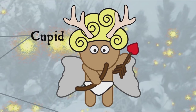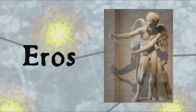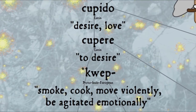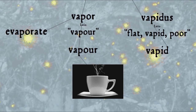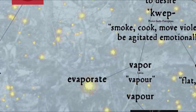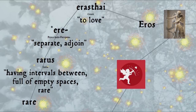Next up is the reindeer Cupid. Cupid is of course the Roman god of desire and erotic love, which the Romans associated with the Greek god Eros. Latin cupido, meaning desire or love, comes from the verb cupere, to desire, which goes back to a Proto-Indo-European root quep meaning to smoke, cook, move violently, be agitated emotionally — so you could say Cupid is really smokin'. The English derivative cupidity generally refers to desire for money, not sex, but the related concupiscence does indicate sexual desire. Also possibly from this root through Latin vapor are the words vapor, evaporate, and through vapidus, English vapid — literally 'that has emitted steam or lost its vapor.' Greek Eros may come from the root ere meaning to separate or adjoin, from the idea of being separated from — absence does make the heart grow fonder. Some have tried, not very convincingly, to trace a line between Valentine's Day and the Roman festival Lupercalia, which falls on the 13th to 15th of February and draws its name from Latin lupus, wolf.